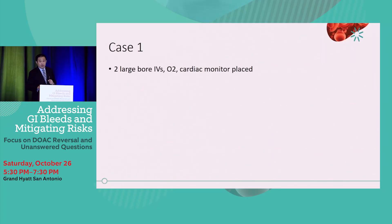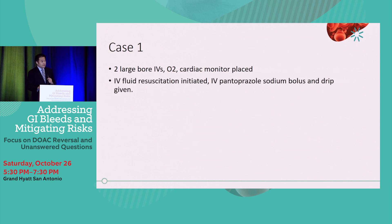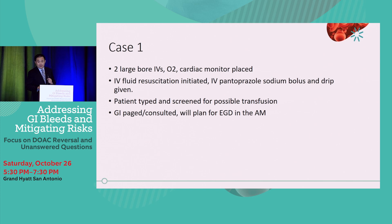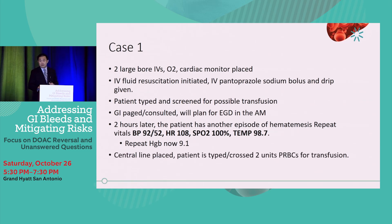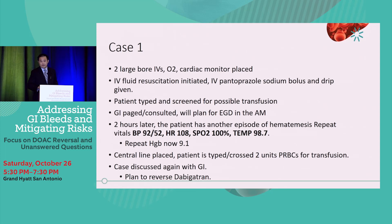We initiate our standard ER protocol: two large-bore IVs, O2, cardiac monitor placed. IV resuscitation initiated, IV pantoprazole bolus and drip given. The patient is typed and screened for possible transfusion given hemoglobin in the 11s. GI is paged at 11 o'clock and consulted, with plan for possible EGD first thing in the morning. Two hours later, as the patient continues to board, he has another large bolus of hematemesis. Repeat vital signs show blood pressure hypotensive in the 90s, tachycardic in the 100s. Repeat hemoglobin has dropped to 9.1. We initiate central line placement, type and cross for two units of red blood cells for emergent transfusion, and page GI again. We plan to attempt to reverse the dabigatran for this acute GI bleed.